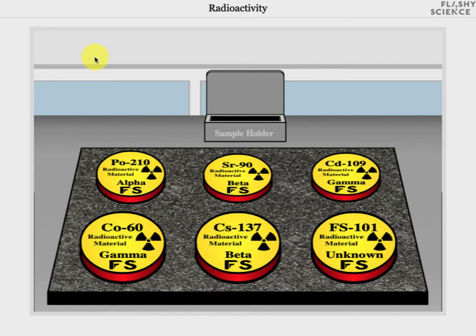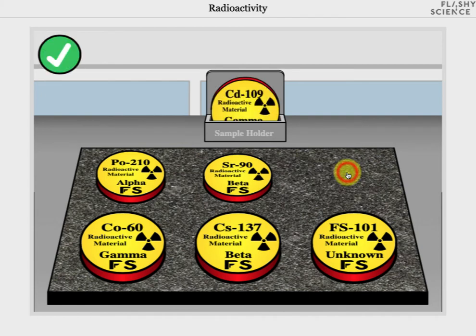Each emits different types of radiation or a different balance of the different types of radiation. I'm going to click on cadmium 109 which emits gamma radiation. The source is then in the sample holder at the top of the screen and a green and white confirm button appears in the top left of the screen.